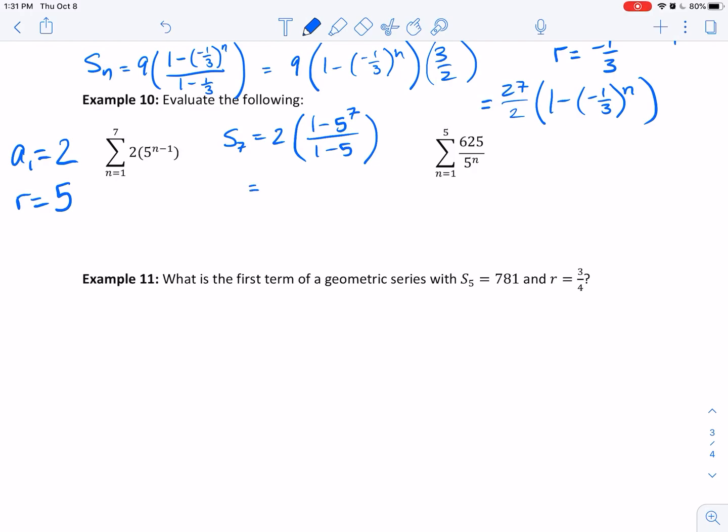I'm entering that into my calculator. It's 2 times 1 minus 5 to the 7 over 1 minus 5. I can type that in beautifully in my calculator and I get 39,062.